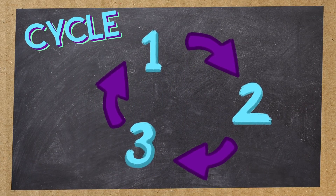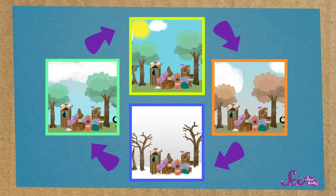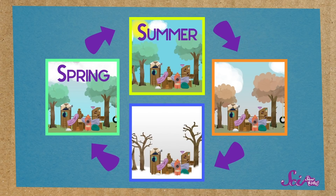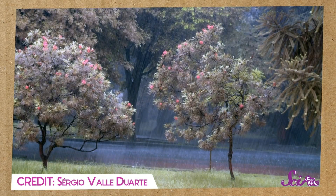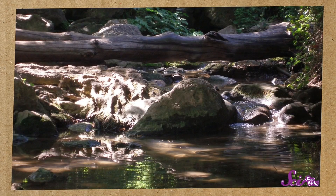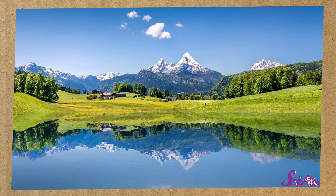In the water cycle, all of the water on Earth goes through a set of steps that repeat over and over. Let's start with rain — water that falls from the sky. Some rainwater soaks into the ground, but a lot of it flows into little creeks and streams, and then ends up in rivers, lakes, and eventually the ocean. When we get to the last step in a cycle, we go back to the beginning and go through the steps again — just like the four seasons cycling back to spring.